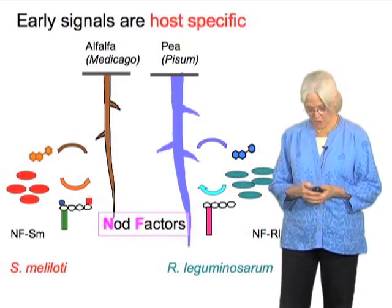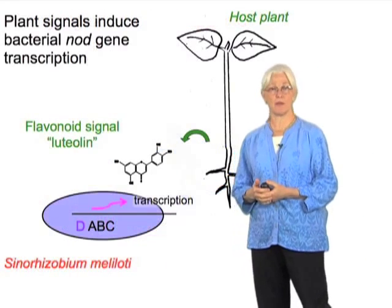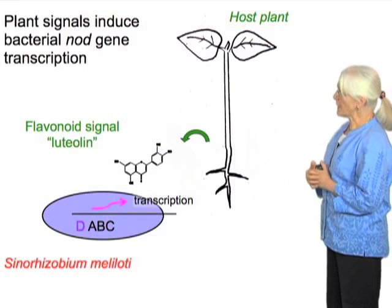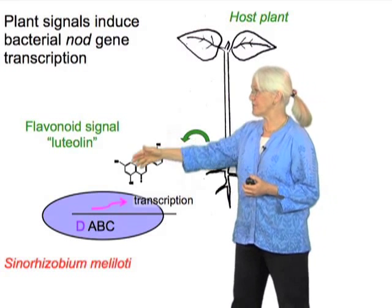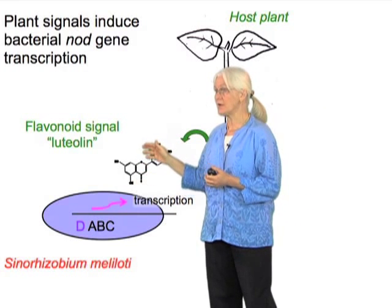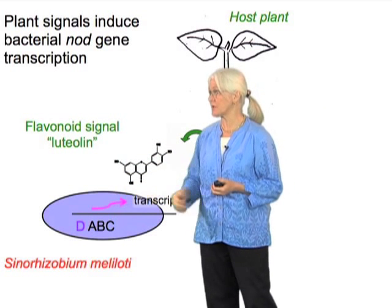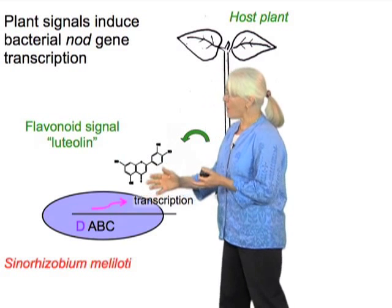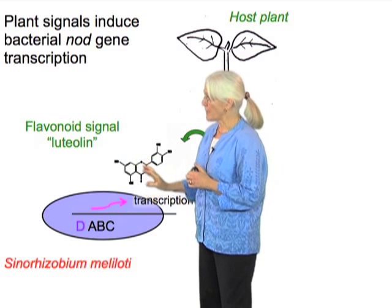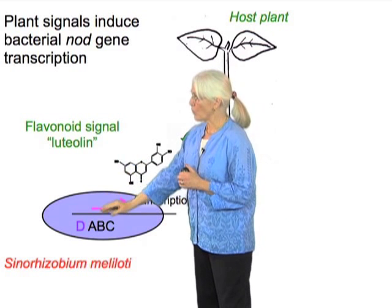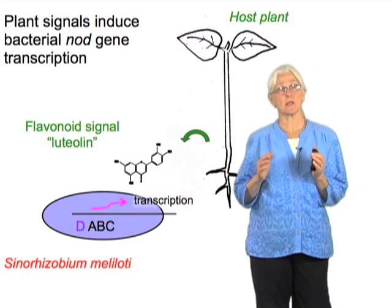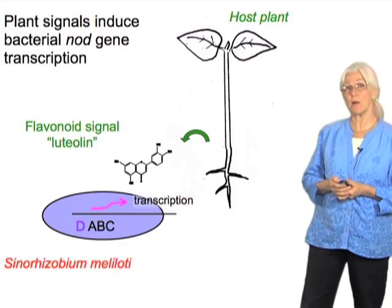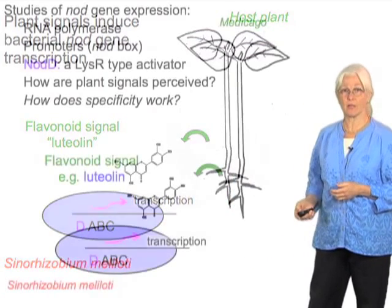We're going to talk only about the first part of that conversation. Here I'm showing again the host plant producing a flavonoid signal, and that is causing transcription in the bacteria. I'd like to focus on the interaction of the flavonoid with a protein encoded by the gene NodD. NodD is an activator protein, part of the LysR family.